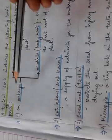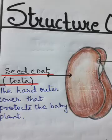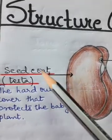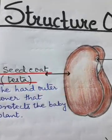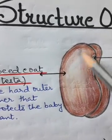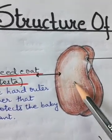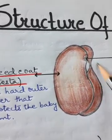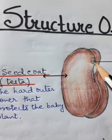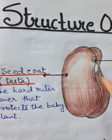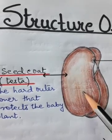Now let's discuss each part in detail. The first is the seed coat, also known as the testa. The seed is covered by this hard outer covering, which protects the embryo — the baby plant — from harsh conditions and saves the seed from drying out.